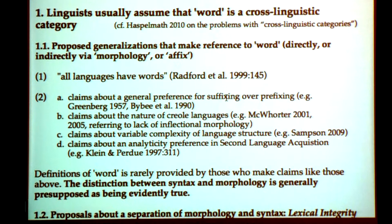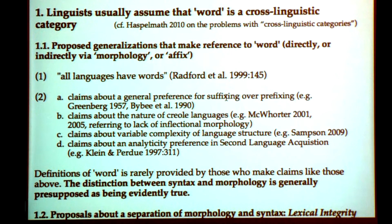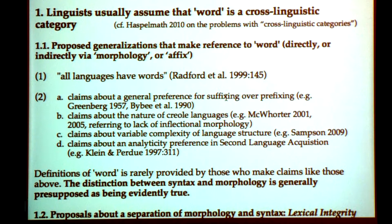Claims about the nature of Creole languages — McWhorter referred to the lack of inflectional morphology in Creoles, but Creoles do have tense-aspect marking. Is it morphological marking or separate particles? He isn't clear about that. People also make claims about variable complexity of language structure, saying languages with a lot of morphological marking are complex. But some languages have marking — tense, aspect, modality, positional — that doesn't count just because it's expressed by separate words? These claims are very problematic because people just assume that words exist.